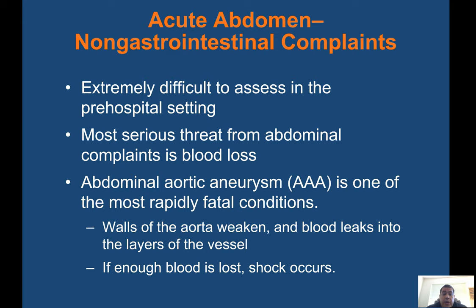Orthostatic vital signs can help determine if a patient is hypovolemic — obtain blood pressures and pulse rates with the patient lying, sitting, and standing, noting any drop in blood pressure or increase in heart rate when moving to an upright position. Acute abdomen and non-GI complaints are extremely difficult to assess in the pre-hospital setting. The most serious threat from abdominal complaints is blood loss. Abdominal aortic aneurysm (AAA) is one of the most rapidly fatal conditions: the walls of the aorta weaken, blood leaks into the vessel layers, and if enough blood is lost, shock occurs.